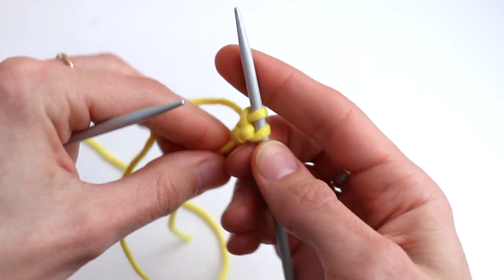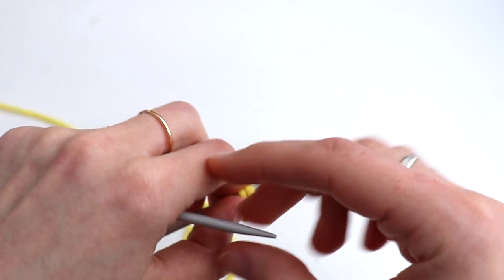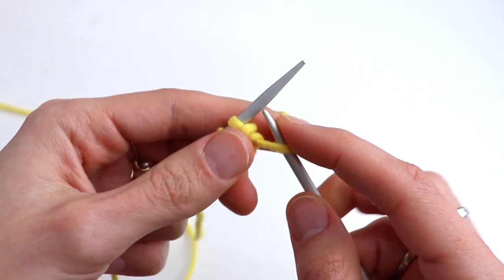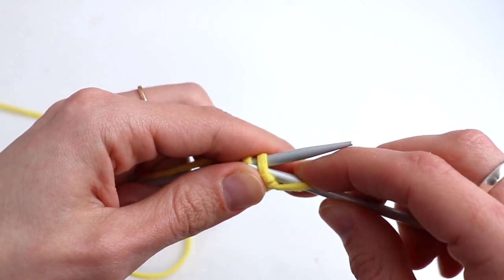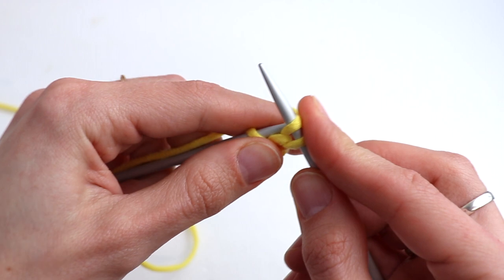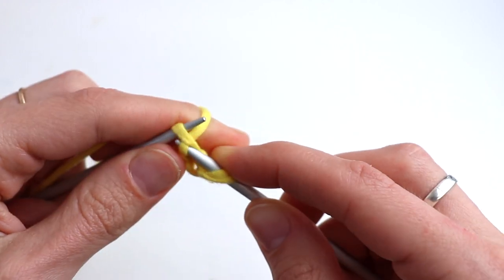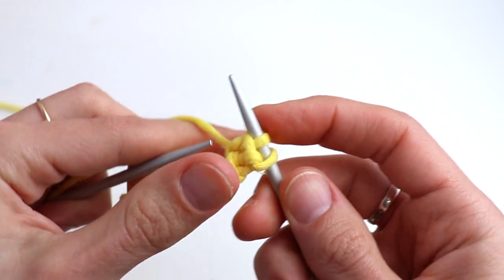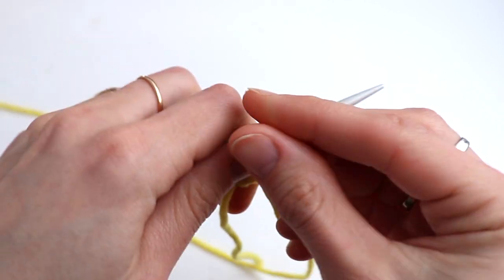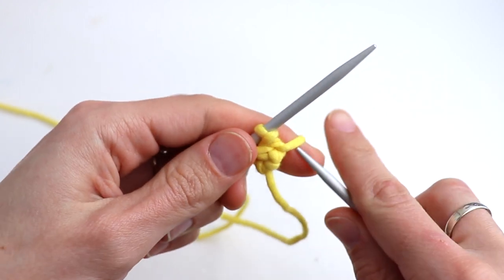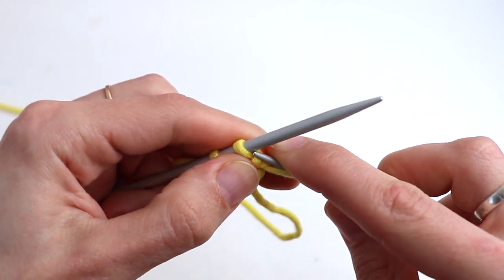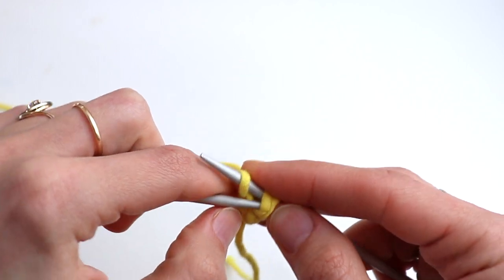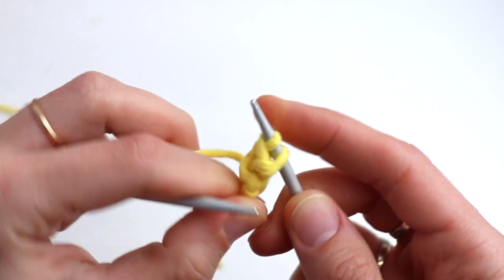Turn. Let's repeat. Yarn over, slip, then knit one and slip over. Yarn over, slip, then knit one, slip over.